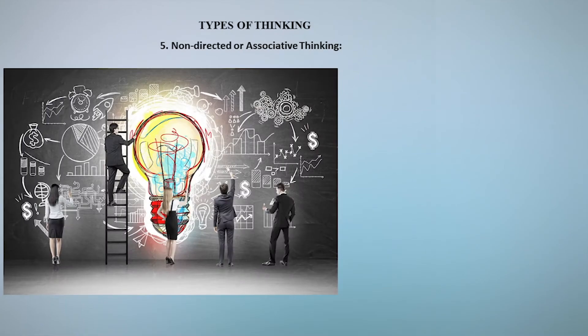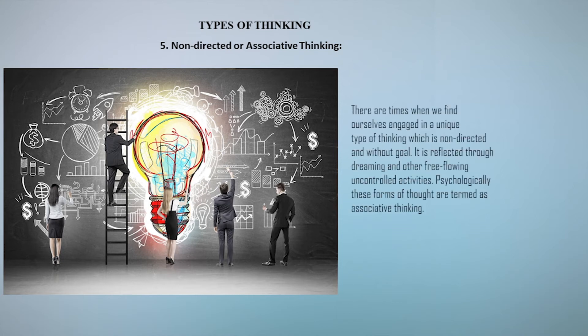The fifth type is non-directed or associative thinking. There are times when we find ourselves engaged in a unique type of thinking which is non-directed and without a goal. It is reflected through dreaming and other free-flowing, uncontrolled activities. Psychologically these forms of thought are termed as associative thinking.